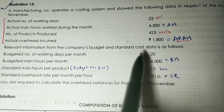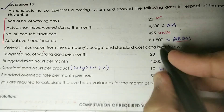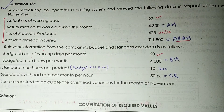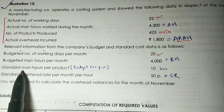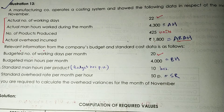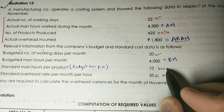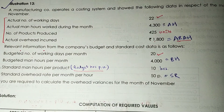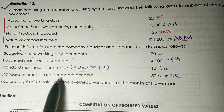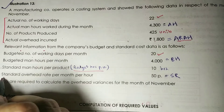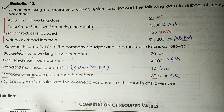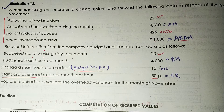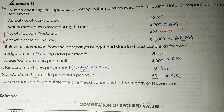The relevant budget and standard cost data is as follows. Budgeted working days per month: 20 days. Budgeted man hours per month (BH): 4,000 hours. Standard man hours per product: 10 hours (this is budgeted hours per unit). Standard overhead rate per hour (SR): 50 paise, i.e., 0.5 rupees. We are required to calculate overhead variances for November.